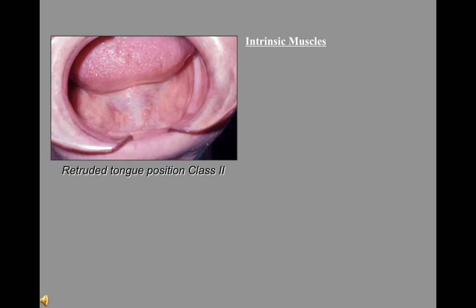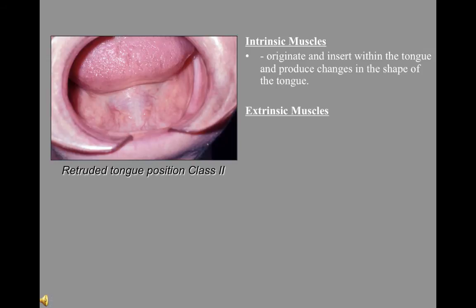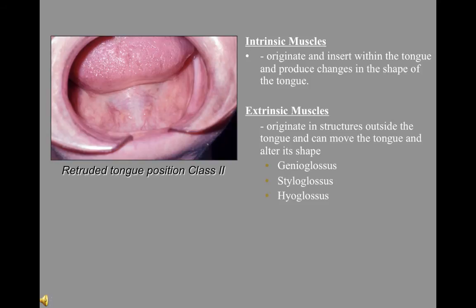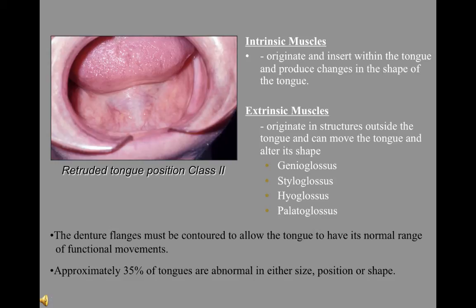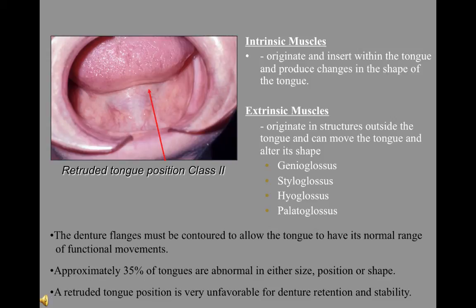The intrinsic muscles originate and insert within the tongue and produce changes in the shape of the tongue. The extrinsic muscles originate in structures outside the tongue and can move and alter its shape — they are the genioglossus, styloglossus, hyoglossus, and palatoglossus. The denture flange must be contoured to allow the tongue its normal range of function and movements. Approximately 35 percent of tongues are abnormal in either size, position, or shape. A retruded tongue is very unfavorable for denture retention and stability.